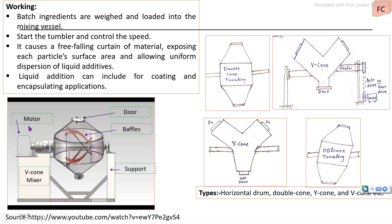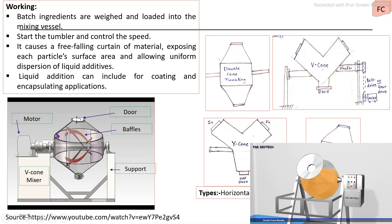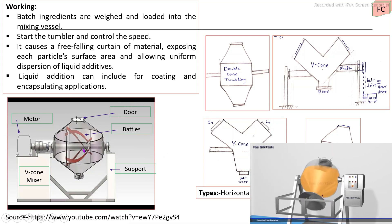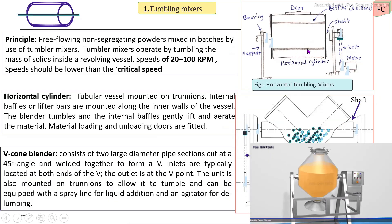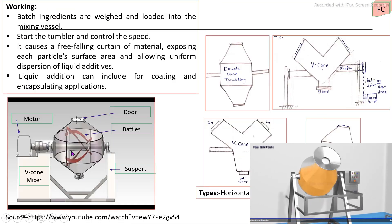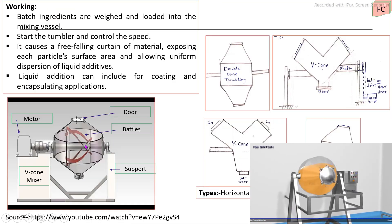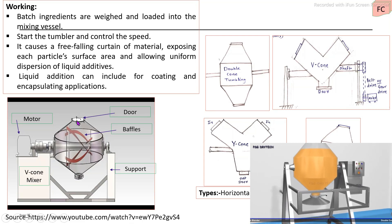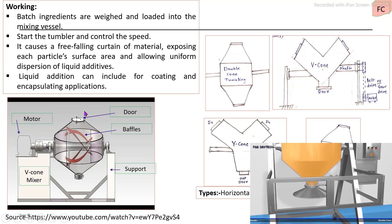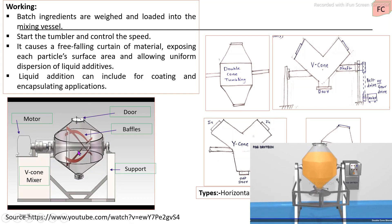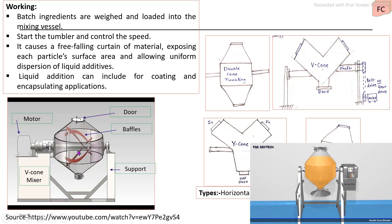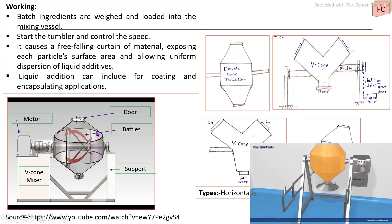Looking at the working of the tumbling mixer, inside the tumbling mixer there are also baffles provided to improve the mixing operation. In working, the first door is opened and raw material dry ingredients are loaded up to 60 to 70 percent of the total internal volume.